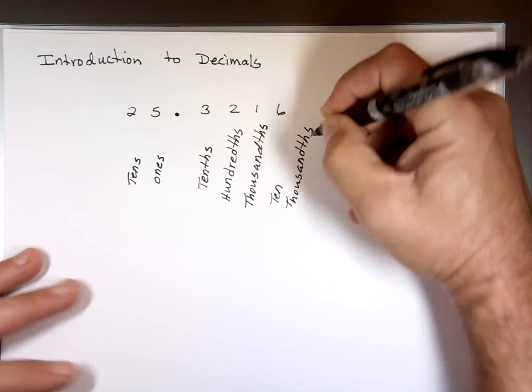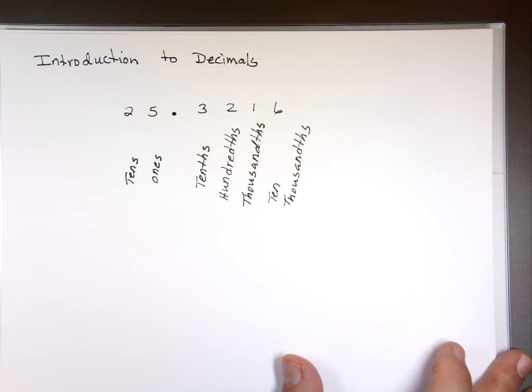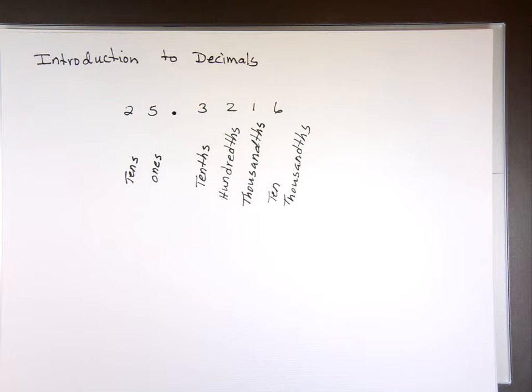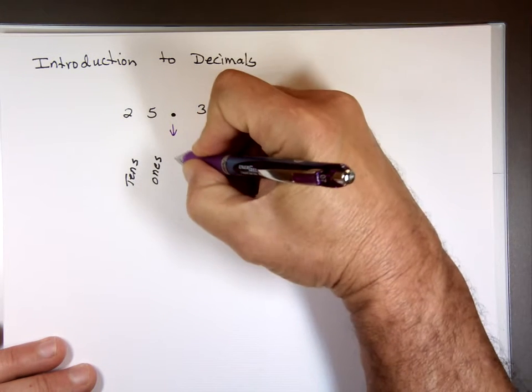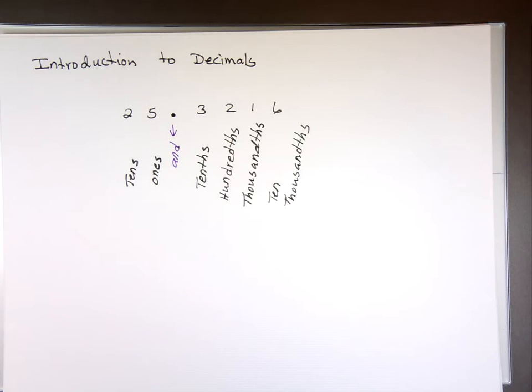We have to know the place value of each digit. When we start rounding, they're going to say round to the nearest tenth. That means one decimal place. Round to the nearest hundredth, that's two decimal places. Round to the nearest thousandth, three decimal places. Another thing, in decimal, you and I will always say point. There's no such thing as point in math. The decimal point is known as and. So, when we write the number, we go and. That would be 25 and. Then we go to the decimal portion.